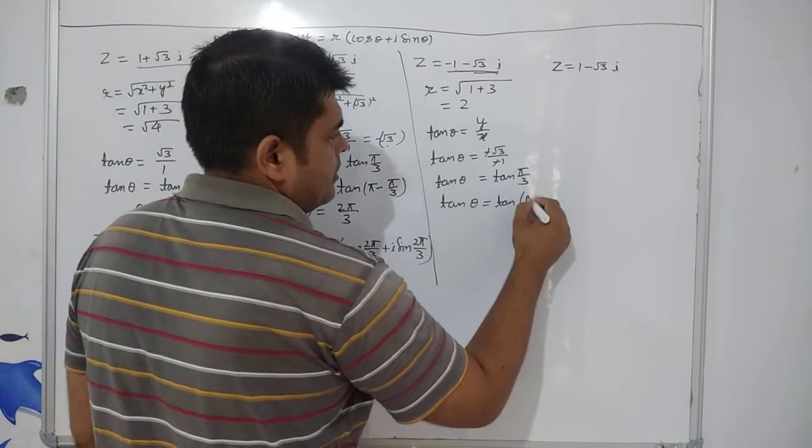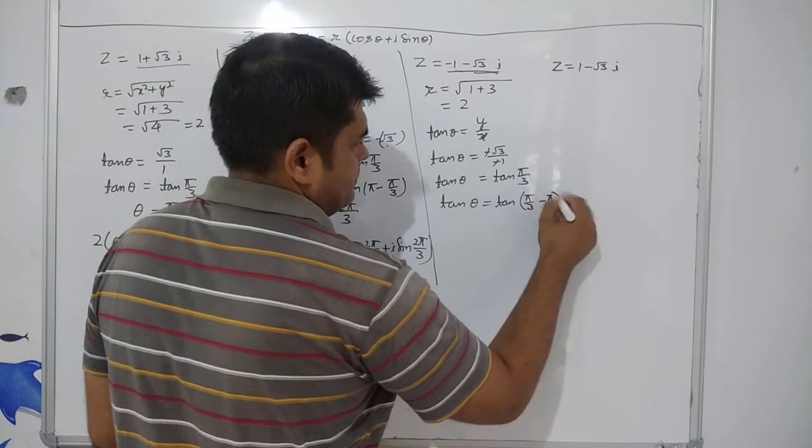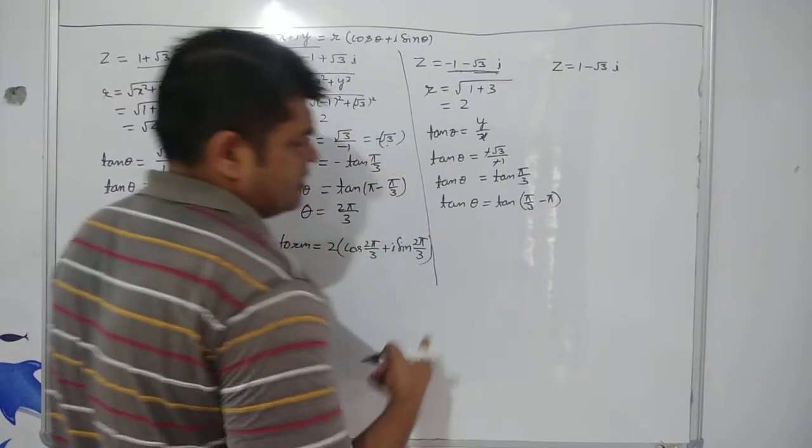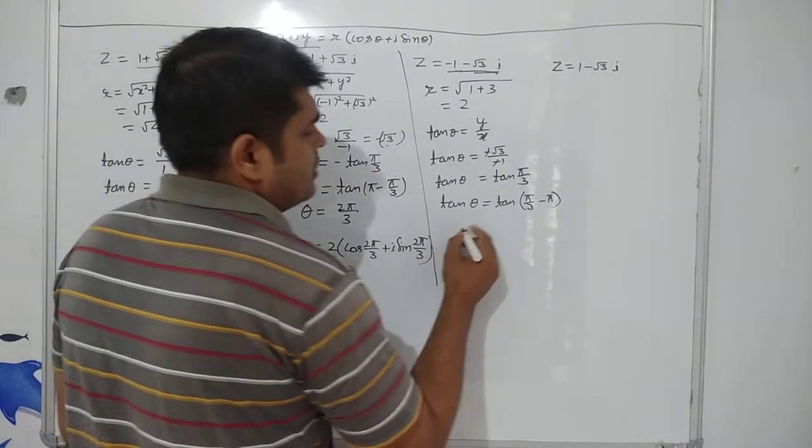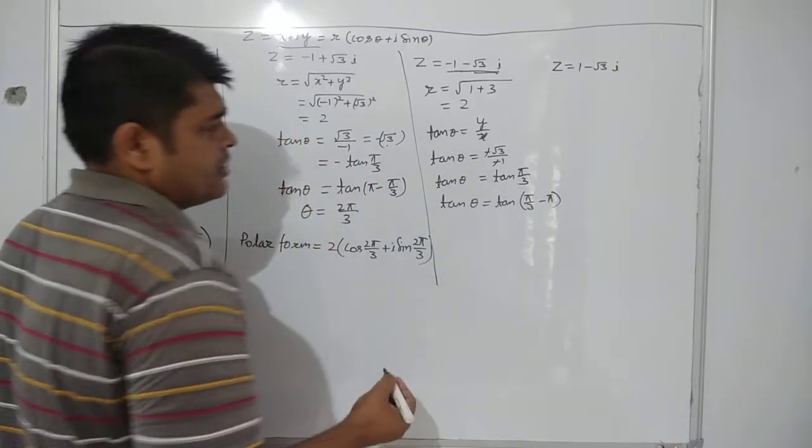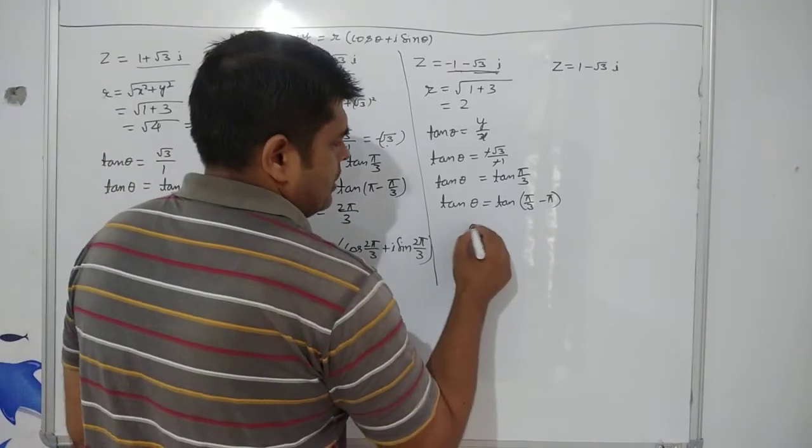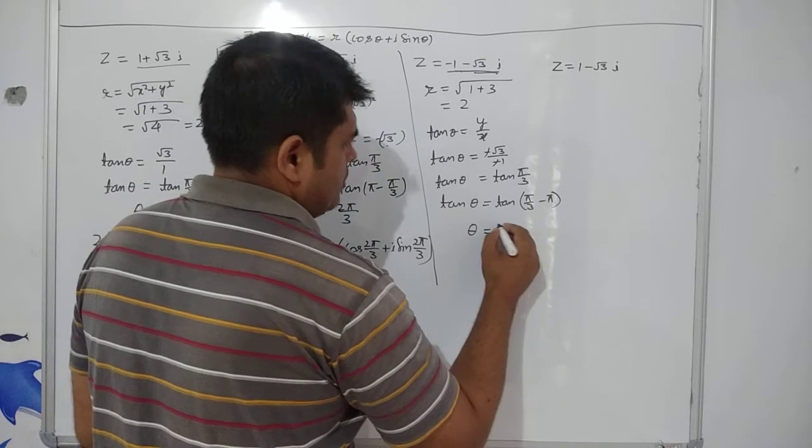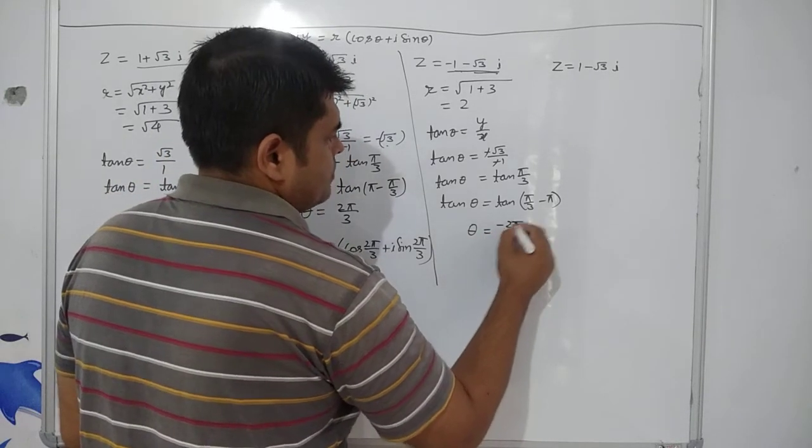So, it will be written as pi plus pi by 3. Recall that diagram. You will land in the third quadrant after doing this. What will be the theta value? Theta value is minus 2 pi by 3.